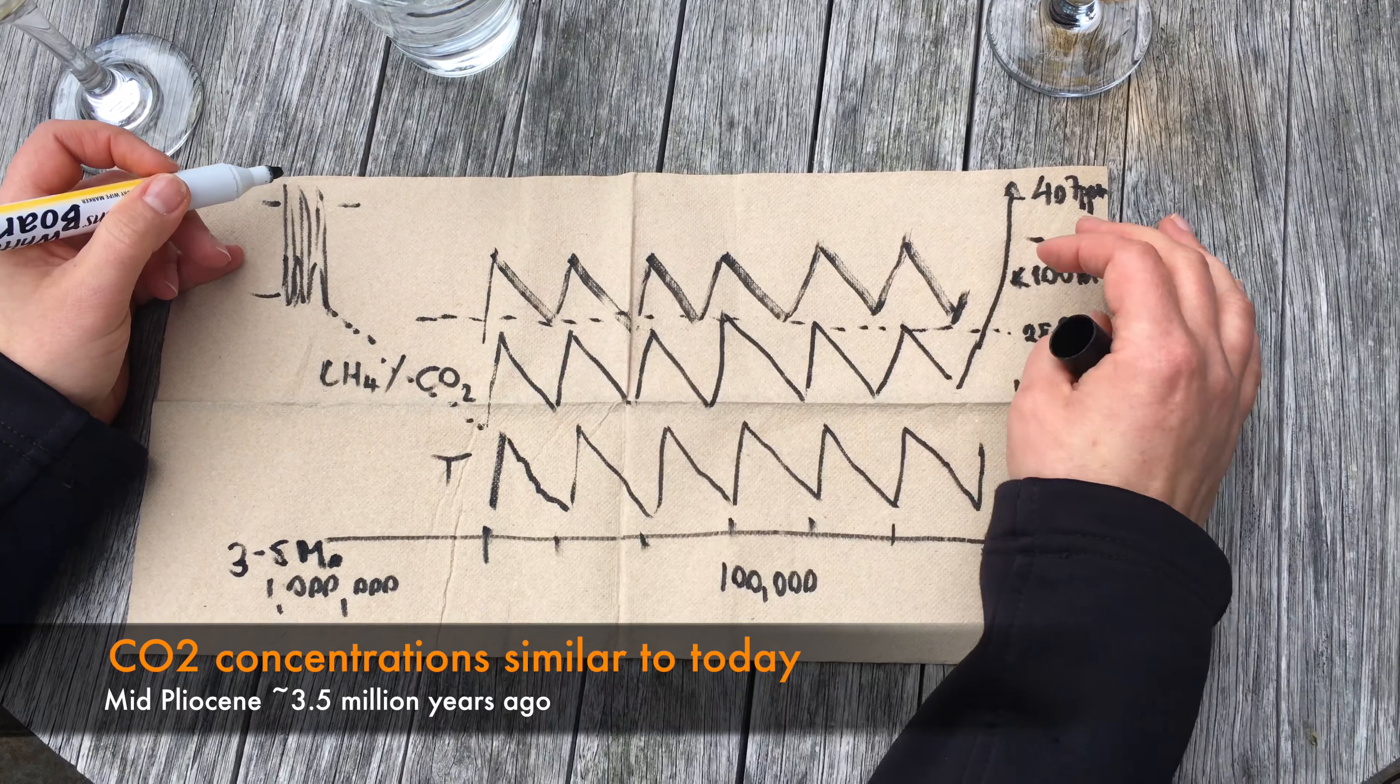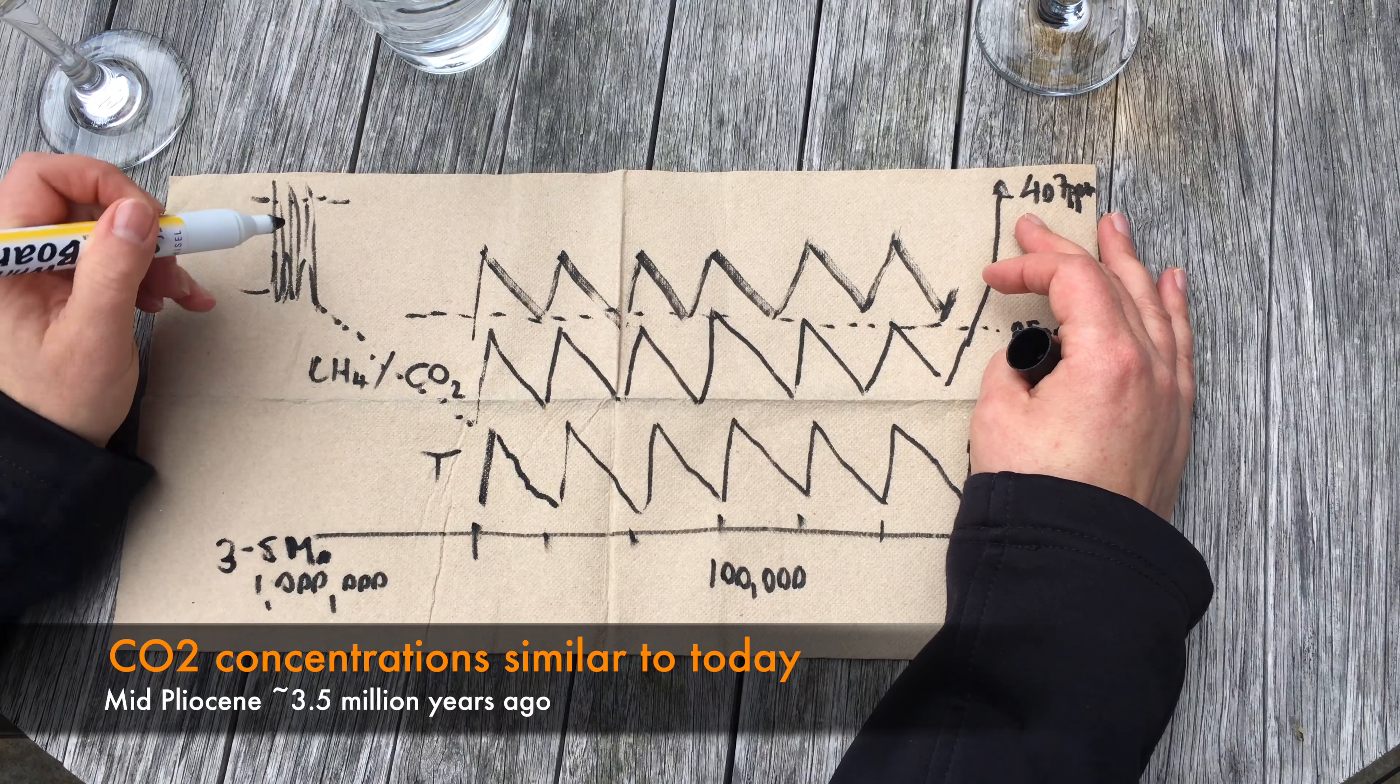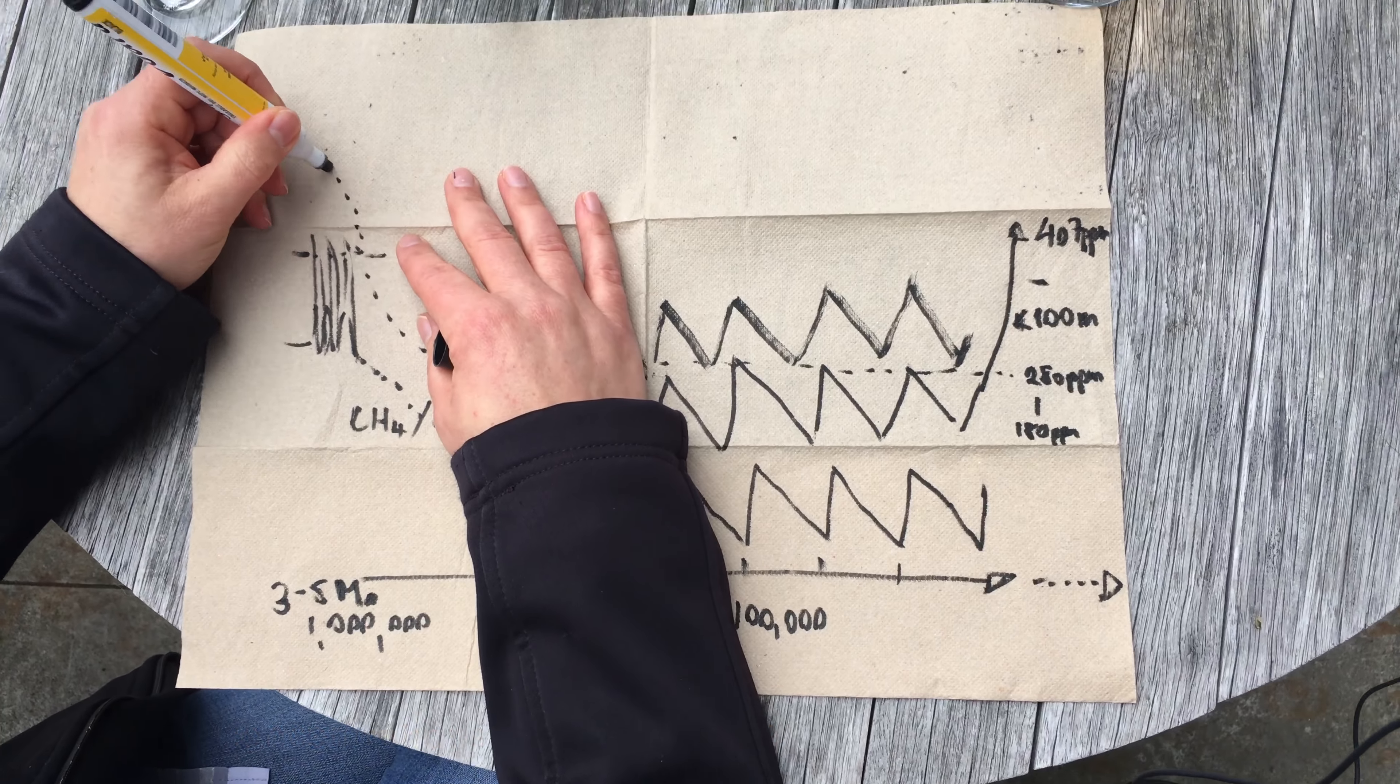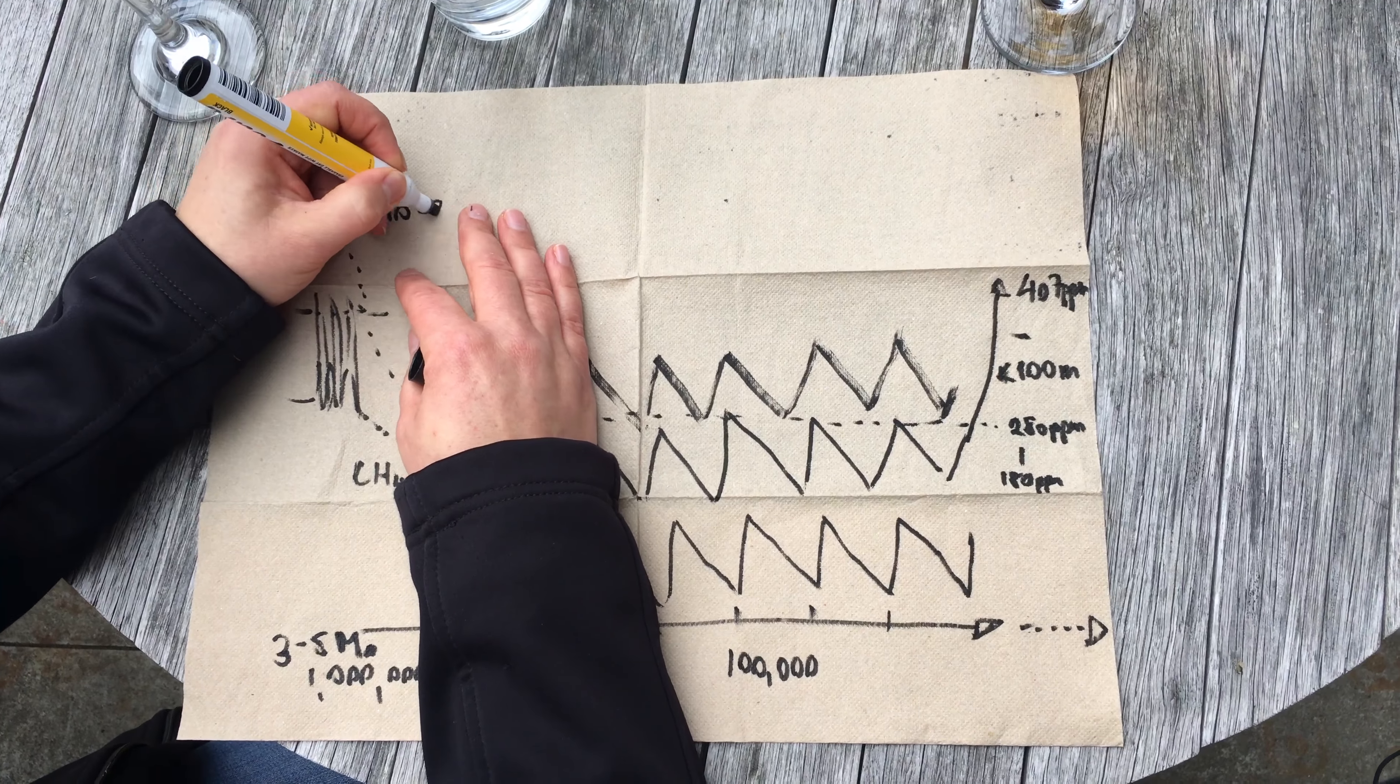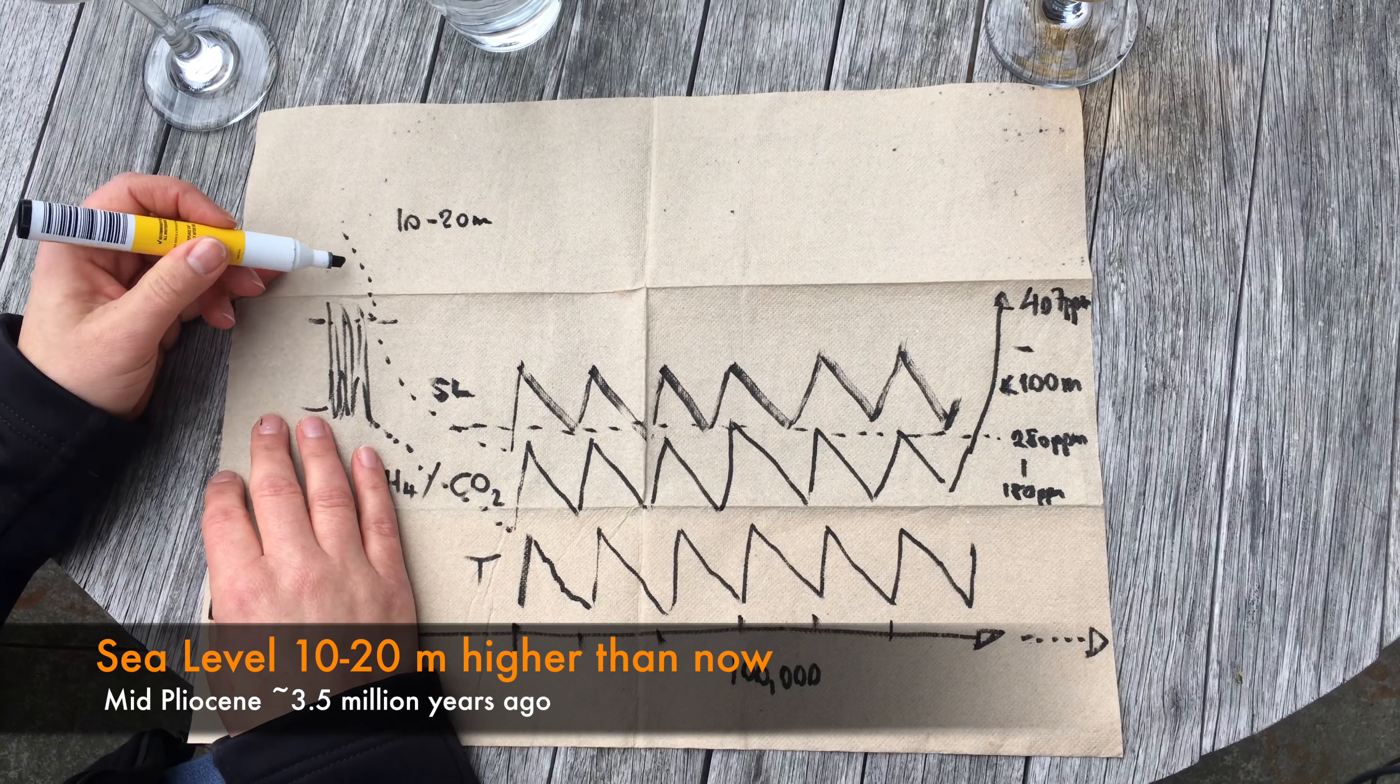During that time period, we can now look at what sea level did, and we can see that the last time we had about 400 ppm CO2 concentration, sea level during that time was about 10 to 20 meters higher than it is today. Now that is really scary.